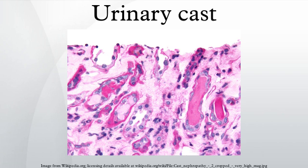Epithelial cell casts are formed by inclusion or adhesion of desquamated epithelial cells of the tubule lining. Cells can adhere in random order or in sheets and are distinguished by large, round nuclei and a lower amount of cytoplasm. These can be seen in acute tubular necrosis and toxic ingestion, such as from mercury, diethylene glycol, or salicylate. In each case, clumps or sheets of cells may slough off simultaneously, depending on the focality of injury. Cytomegalovirus and viral hepatitis are organisms that can also cause epithelial cell death.